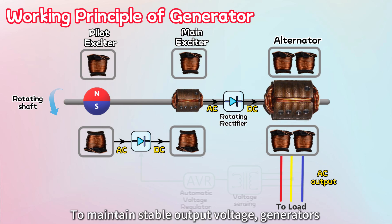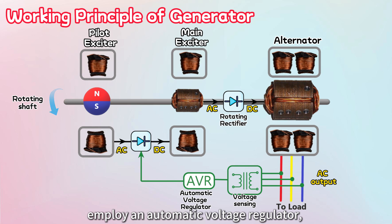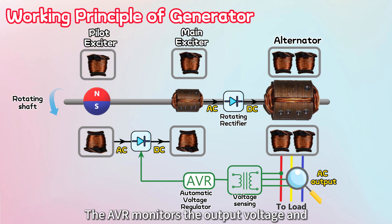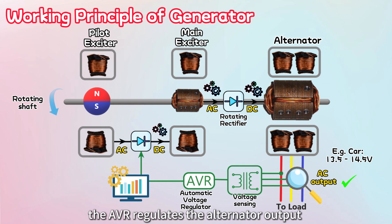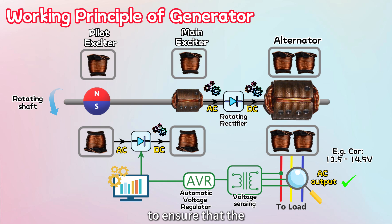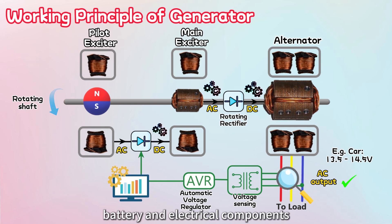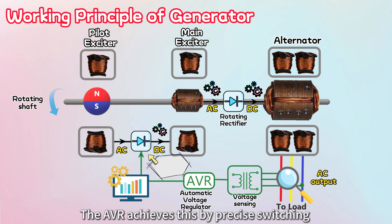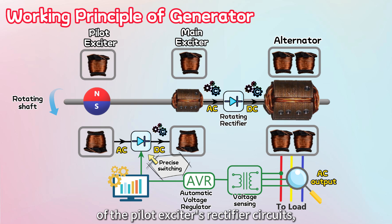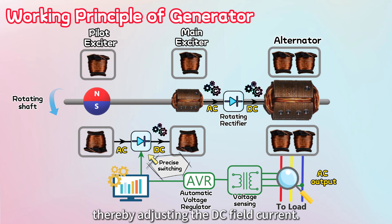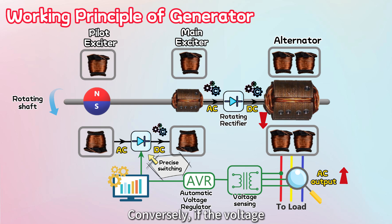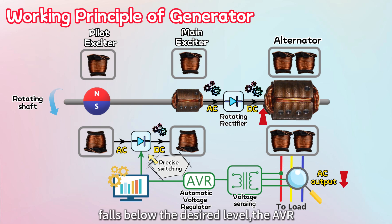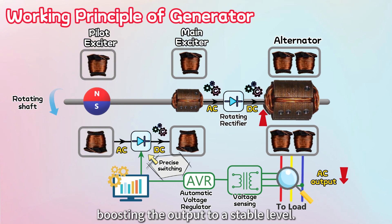To maintain stable output voltage, generators employ an automatic voltage regulator, or AVR. The AVR monitors the output voltage and adjusts the DC field current in the rotor to ensure the voltage stays within a specific range. For example, in cars, the AVR regulates the alternator output between 13.5 and 14.5 volts to ensure the battery and electrical components function properly without damage. The AVR achieves this by precise switching of the pilot exciter's rectifier circuits, thereby adjusting the DC field current. If the output voltage is too high, it decreases the DC field current to reduce the voltage. Conversely, if the voltage falls below the desired level, the AVR increases the DC field current, boosting the output to a stable level.